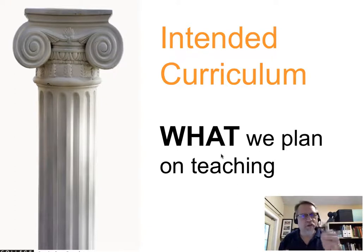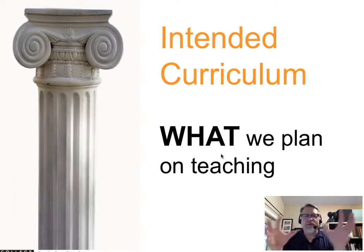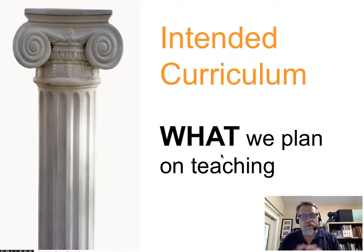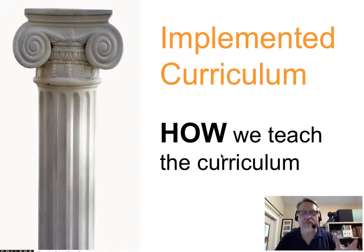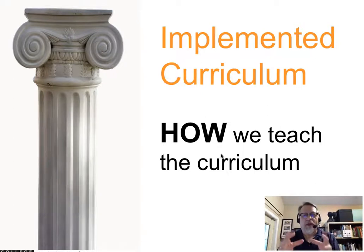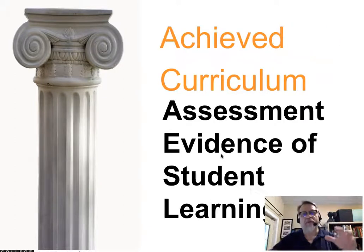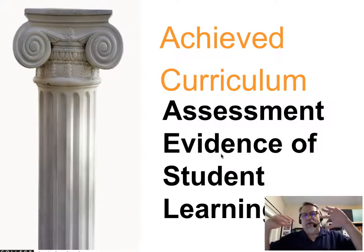Your intended curriculum is what you plan on teaching — this is the outcome or goal. If you are building a competency-based course, these are the goals and objectives you will work with. The implemented curriculum is what you are actually teaching: what activities occur, what actually happens in the body of instruction, and how this transpires.